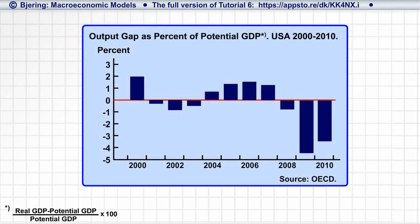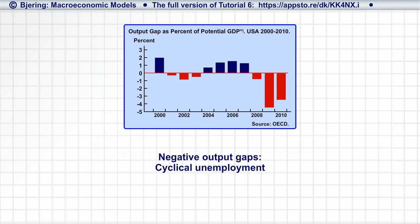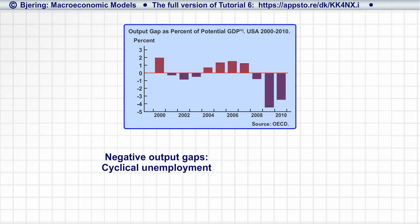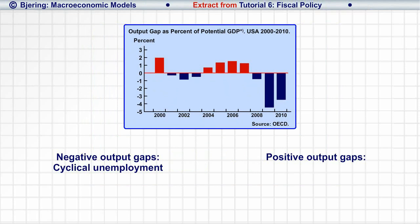Due to the close relationship between output and employment and employment's mirror variable, unemployment, a negative output gap generates cyclical unemployment, a waste of productive resources, while a positive output gap is reflected in unemployment less than structural unemployment, which may generate inflationary pressure.